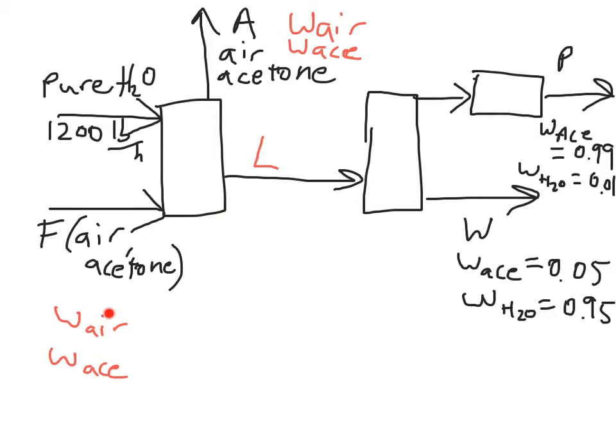So first thing we can do is go ahead and calculate what the mass fractions of air and acetone are in this stream F by using the mole fractions which were given in the problem statement. The other thing we have to realize is what's going where. So in this case I have water coming in, air and acetone coming here, air and acetone going up here in this A stream which is some outlet stream, and then I have L, which I've just labeled going into this distillation column producing two streams here. And the outlets for both of these, which are labeled P and W, are acetone and water, acetone and water.